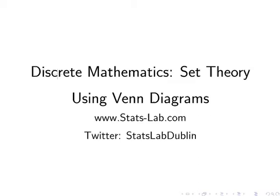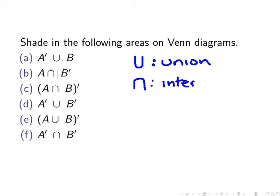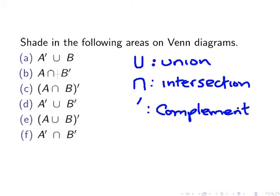In this presentation, we are going to look at Venn diagrams and how they are used in set theory. We're going to shade in areas of Venn diagrams that match mathematical descriptions, using the set operations: union (∪), intersection (∩), and complement — the superscript notation, which we might also say means 'not'.